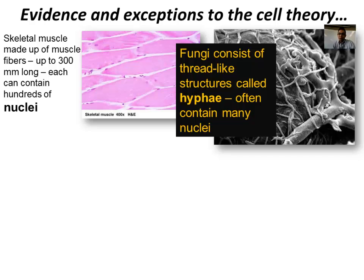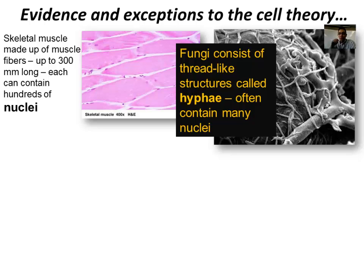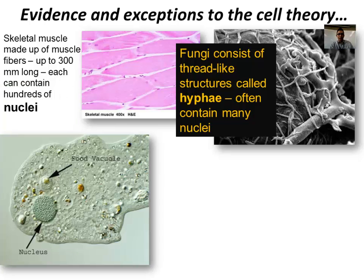Fungi — when you see mold grow on an orange peel or on cheese, what mold or fungi actually do is grow root-like structures called hyphae. These roots grow in and basically suck out nutrients. The same thing happens with athlete's foot, which is caused by a fungus — a microorganism living on your foot, growing little hyphae branches into your dead skin cells to remove nutrients in order to stay alive. Hyphae are similar to skeletal muscle fibers in that they also contain many nuclei.